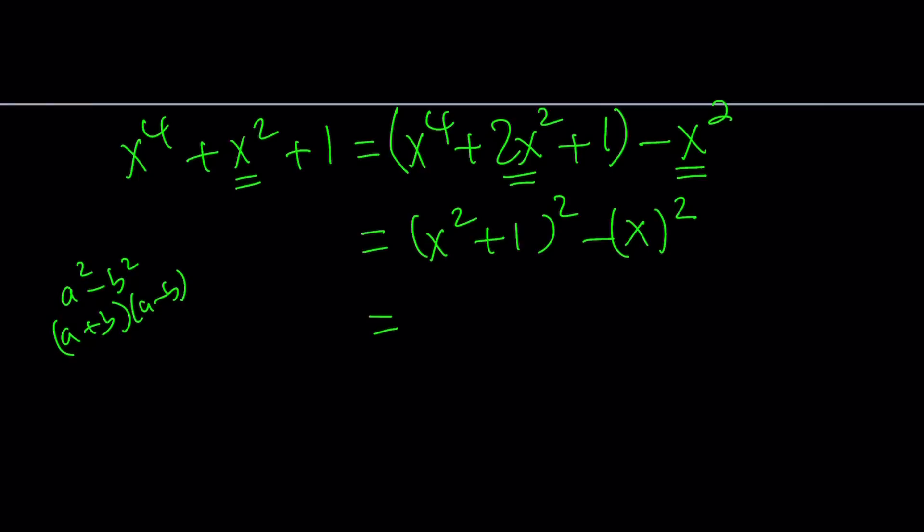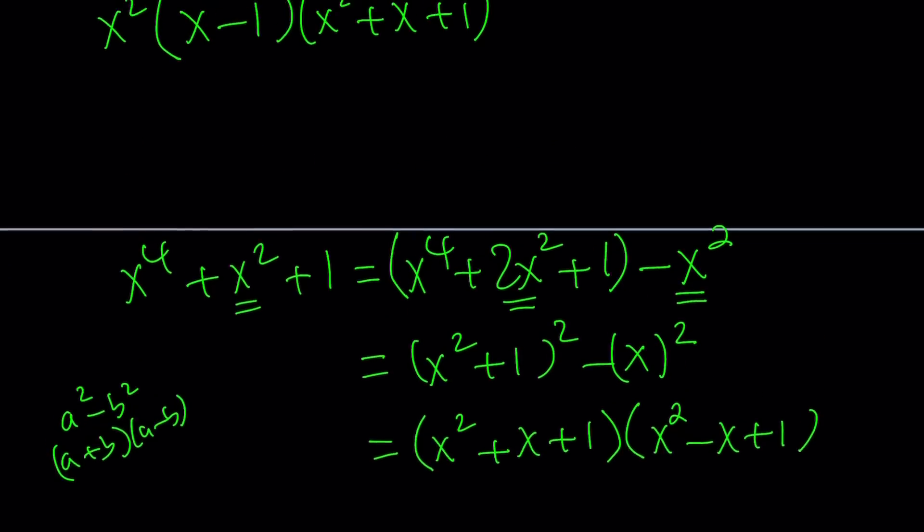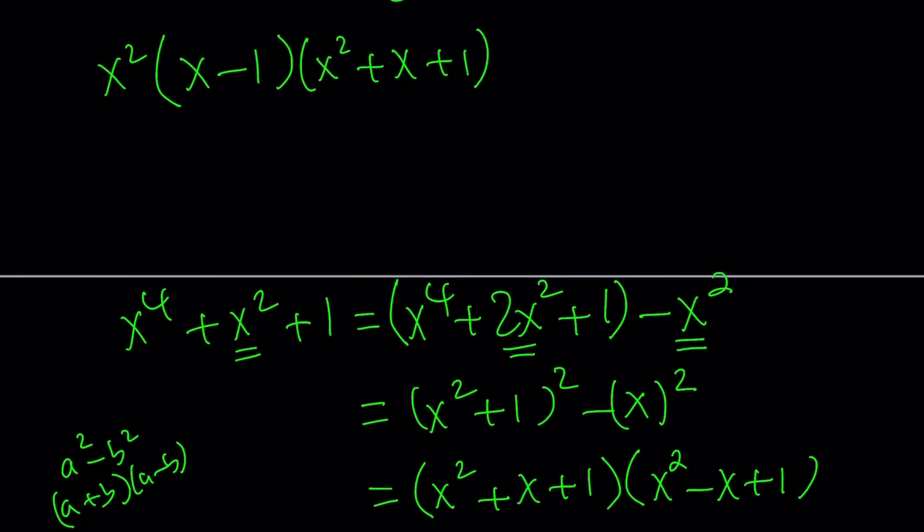Now we can factor it as x squared plus one plus x, but I can write it as x squared plus x plus one, because we should always write polynomials in standard form, right? And then the other factor is going to be x squared plus one minus x, but I can write it as x squared minus x plus one. Great. So we're going to take this expression and paste it over here.